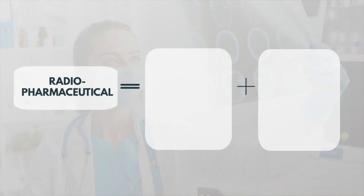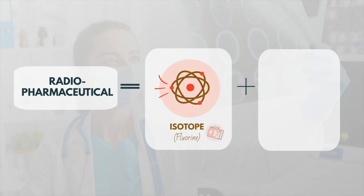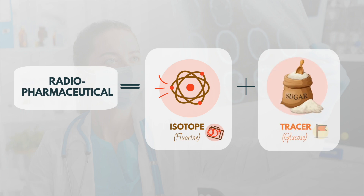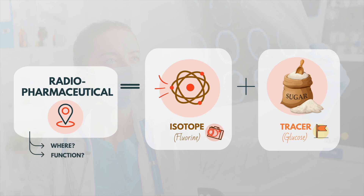A quick summary of what we've discussed so far: a radiopharmaceutical consists of a radioactive isotope, which creates the image, and a tracer, which determines where the signal accumulates to form the image. So radiopharmaceuticals function like a GPS tag, allowing doctors to track not only where in the body the atom goes, but also how it behaves.